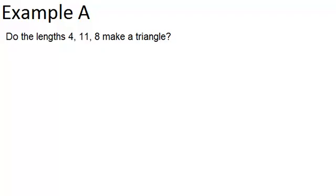Example A says, do the lengths 4, 11, and 8 make a triangle? First, I'm going to rearrange these numbers into order from smallest to biggest — so that's 4, 8, and 11. According to the triangle inequality theorem, in order to make a triangle, the two smaller numbers have to add up to be bigger than the largest number.